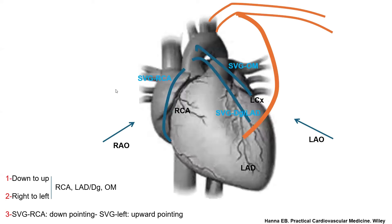This is a quick diagram reminder of graft anatomy. From down to up and from right to left, you have vein graft to RCA, then vein graft to diagonal LAD, and vein graft to OM. We use LAO to engage graft to the right and RAO to engage graft to the left. A graft to the right is down-pointing and requires a down-pointing catheter, whereas a graft to the left tends to be upward-pointing and requires upward-pointing catheters.